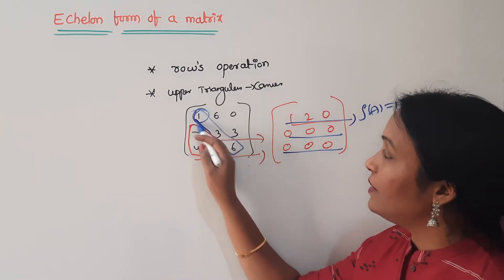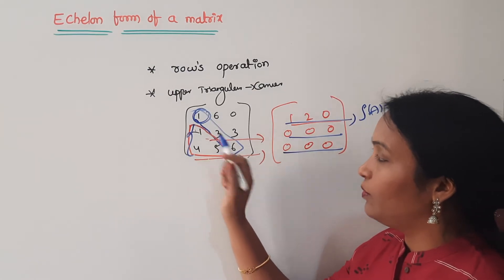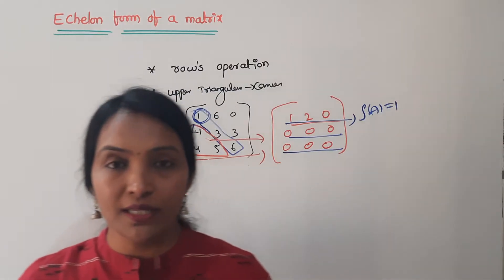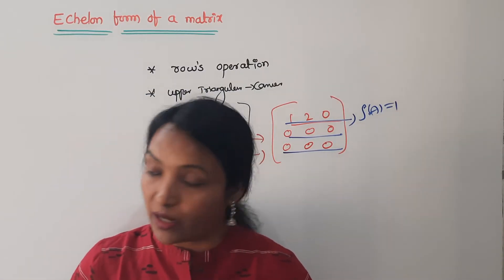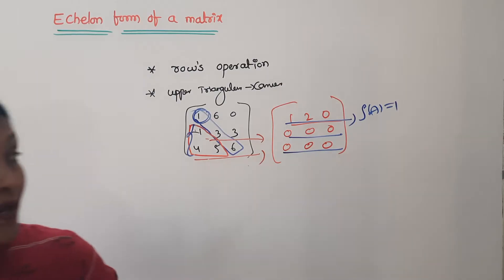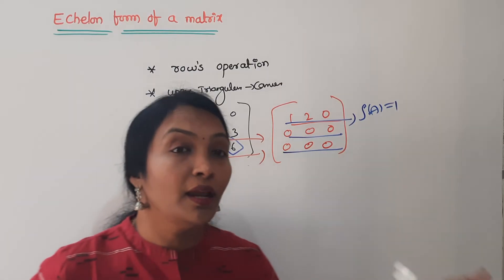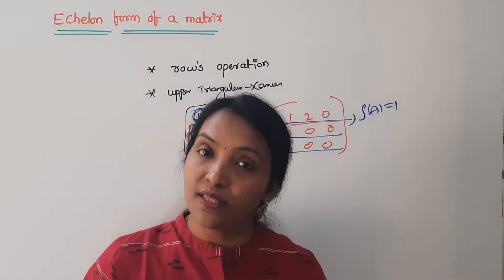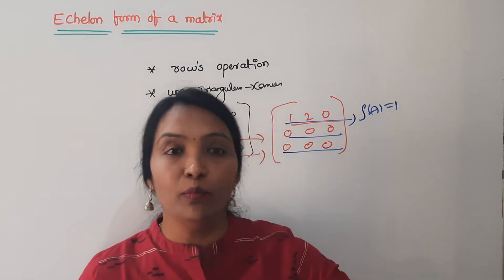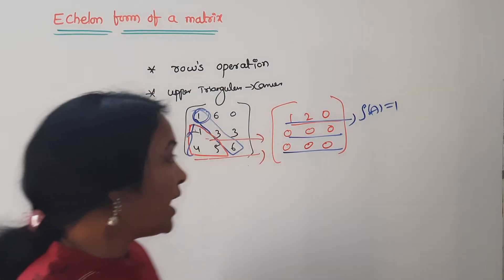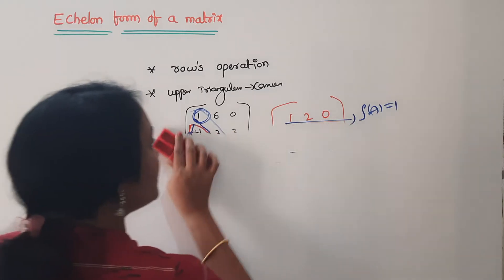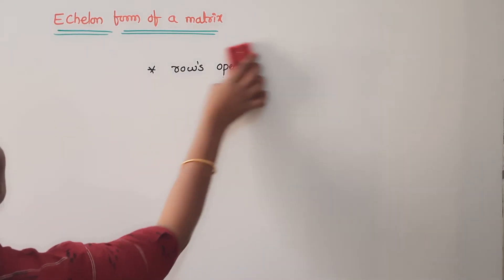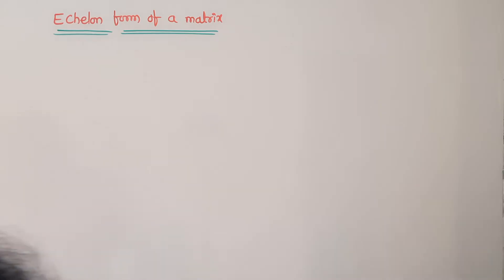First row, first element should be 1; second element should be 0. If you have any doubts, put them in the comments. For more details, check the link to the previous video in the description — you will find more problems. This is a sure-shot question; don't neglect it.